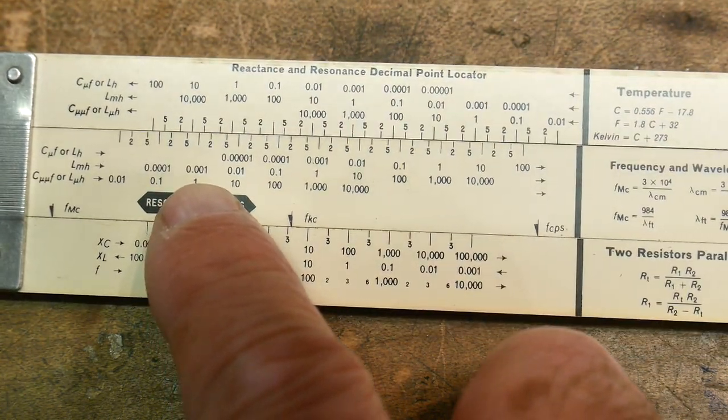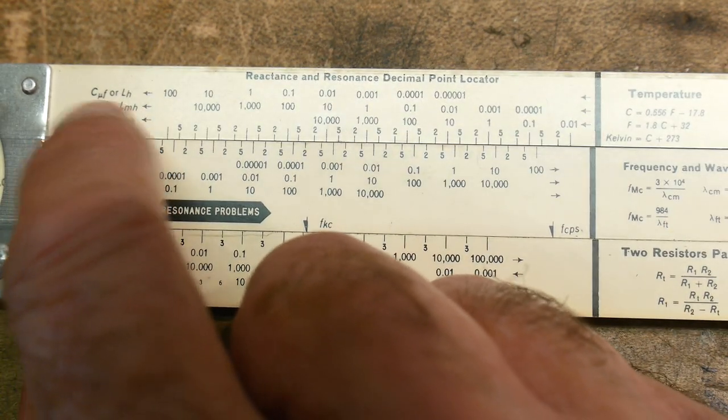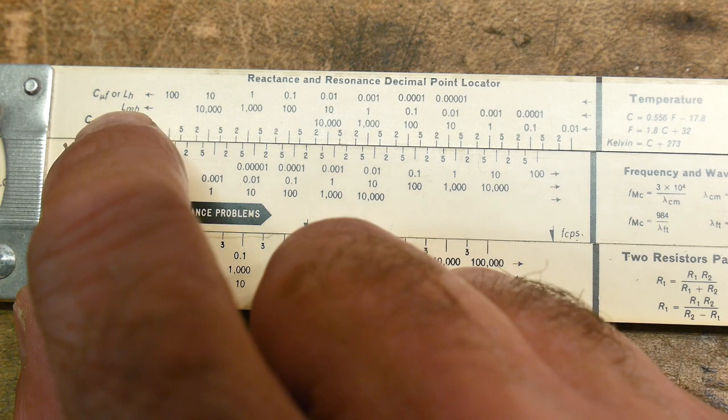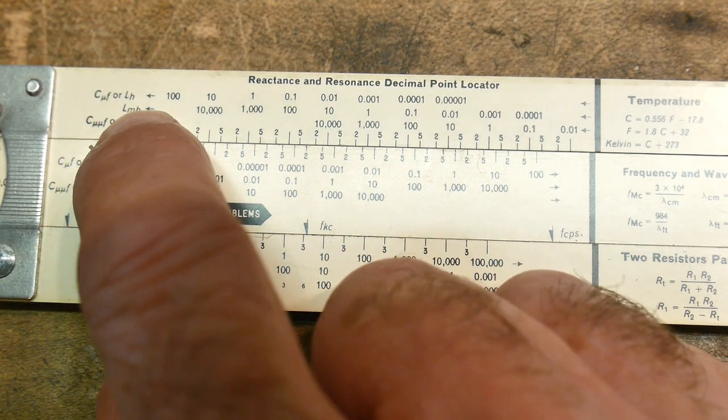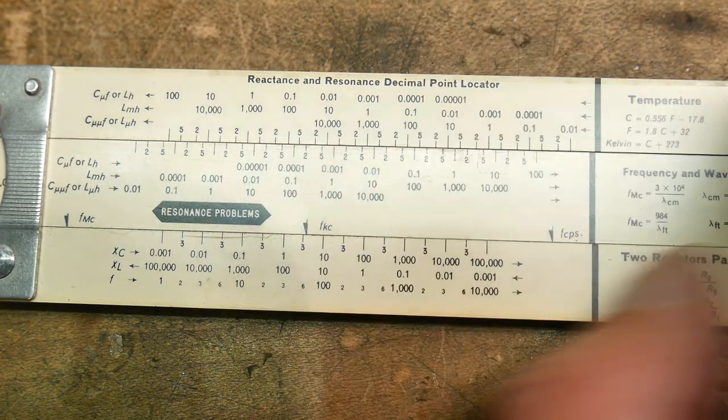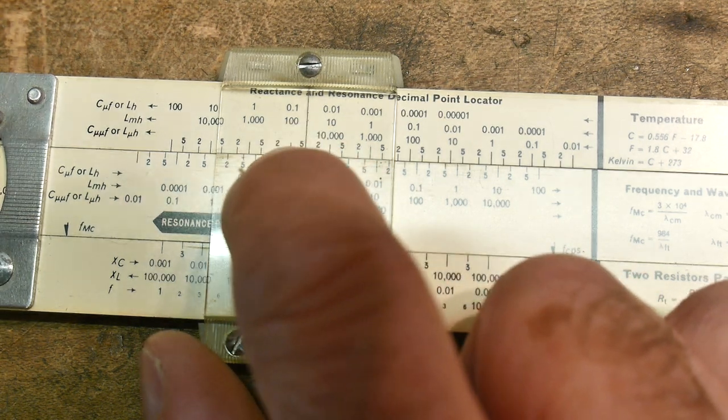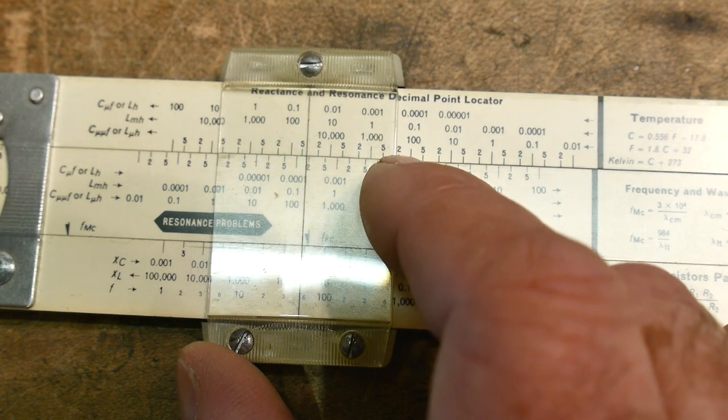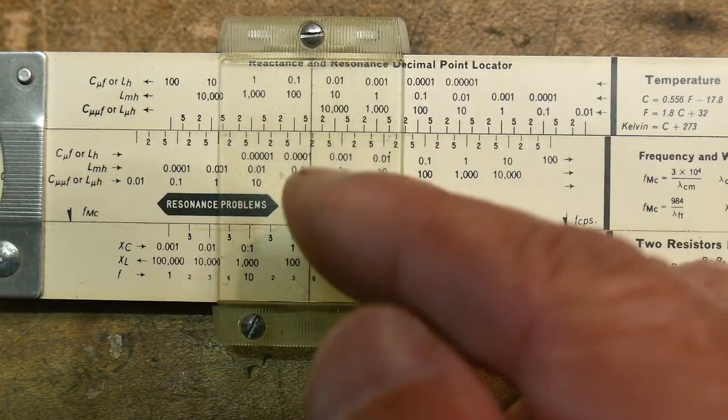And this one right now says reactance problems. So we don't want to use this scale. We want to use resonant problems. And that's way over here. So we have to slide our scale over to here. So now these are all matched up. We're in resonant frequency mode. So what did our problem say? Our problem said 40 millihenries. So if you notice, this is micro, milli, and micro micro, which is picofarads to us. We have 40 millis. So we're going to go here to L. So we're going to go to L. We need 40. So we're going to look on this scale here. It's going to be somewhere between 10 and 100. It's going to be 40. So we've set it to 40.